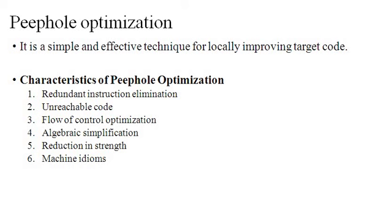Next is machine idioms. The target instructions have equivalent machine instructions for performing some operations. We can replace these target instructions by equivalent machine instructions in order to improve efficiency. For example, some machines have auto increment or auto decrement addressing modes. These modes can be used in code for statements like i = i + 1 or in case of decrement, i = i - 1. So this is peephole optimization.